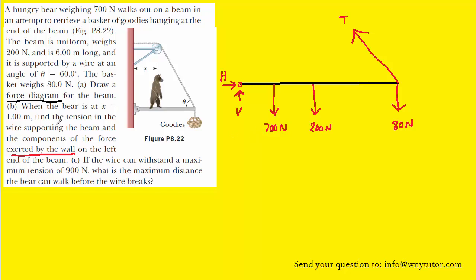In part B, the first question asks us to find the tension in the wire that's supporting the beam. And it turns out in order to do that, we're going to use the concept that the sum of the torques is equal to zero.